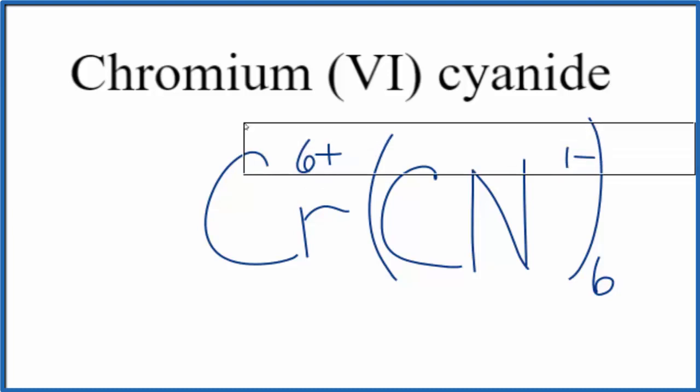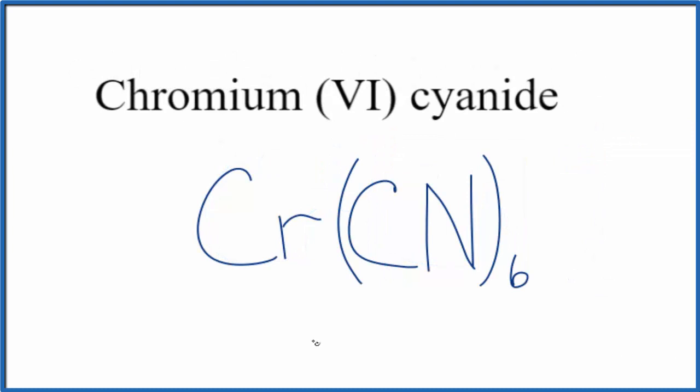So the formula for chromium-6 cyanide is Cr(CN)6.